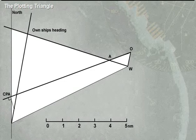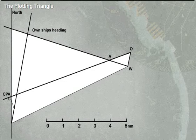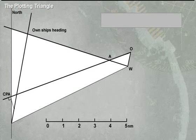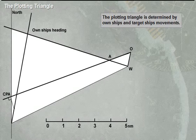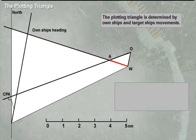To plan and execute collision avoidance, you use a triangle marked with the letters W, O, and A, known as the plotting triangle. The sides of the triangle represent courses and distances covered during the same time period.